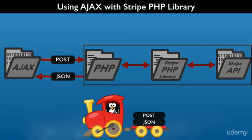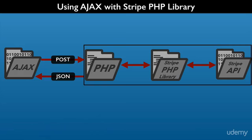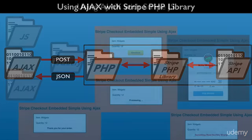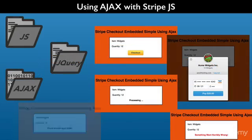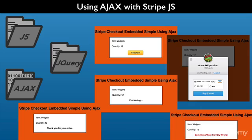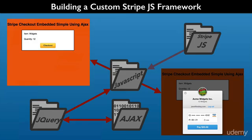Specifically, we'll be working with the POST and JSON data formats. We will send transaction information using POST and then retrieve results using JSON. When processing completes, we can update the UI with meaningful messages explaining the results. When we are done with this section, you will have a basic UI framework to build more complex order processing that uses Stripe.